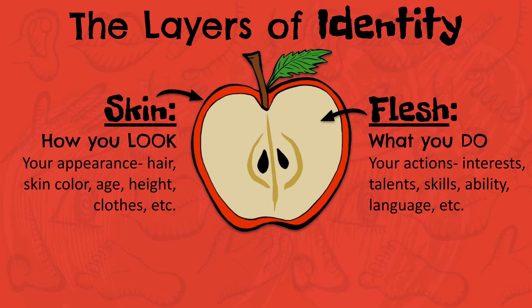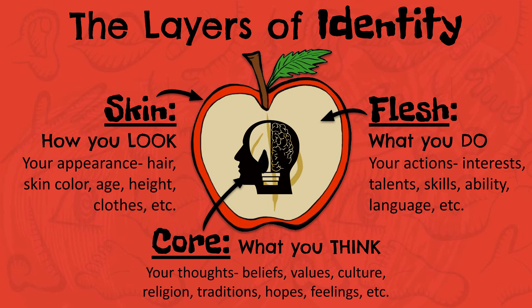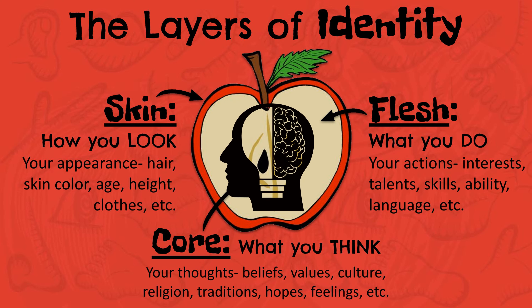The outer layer of our identity is like the skin or piel of an apple. This is how we look and our physical appearance. This includes our hair, race, age, height, clothes, etc. It's also the first thing someone notices about you, and it's often how strangers perceive you.